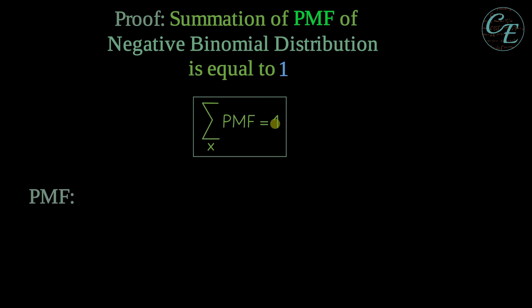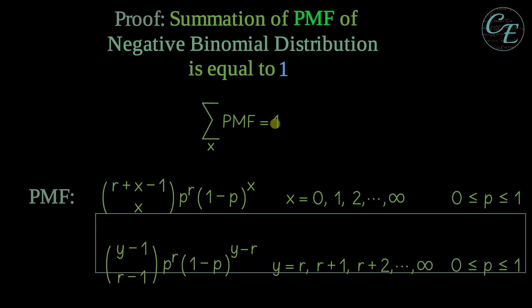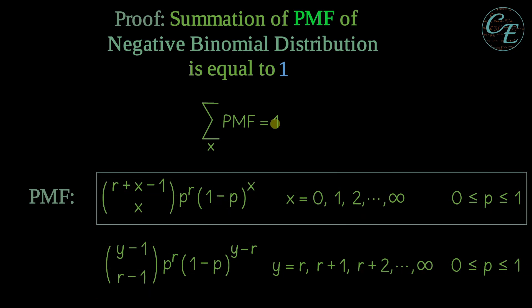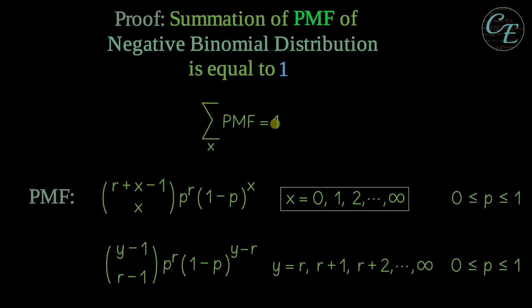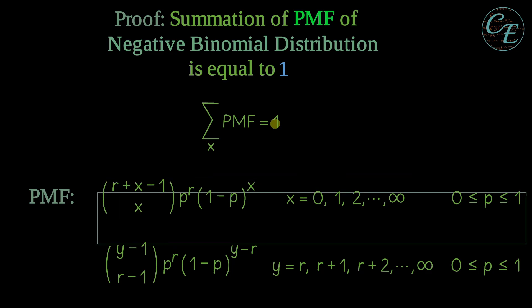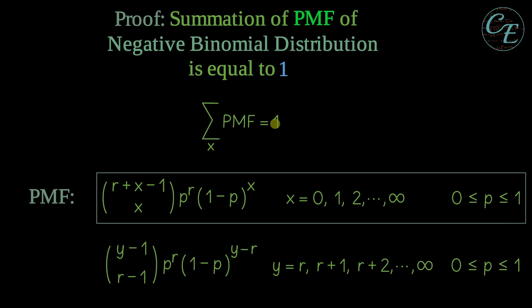Now for the PMF of the negative binomial distribution, we have two forms. We have this one and this one. We will do the proof for both of them. But since in this form it's a simpler support, we will start the proof for this form. Then we will do the proof for this one afterwards. So now let's start our proof with this form.